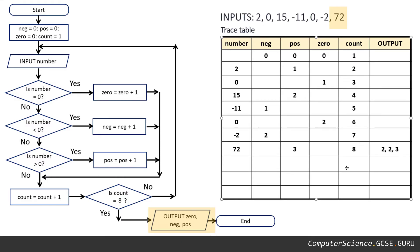And we've said there should be three positive numbers in our list: 72, 15, and two. So I believe this flowchart is fit for purpose, and the trace table has helped us identify that.